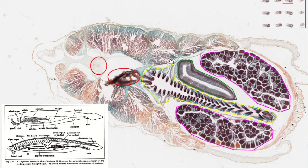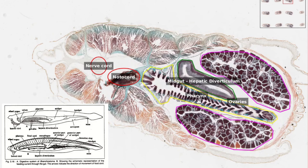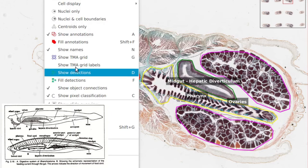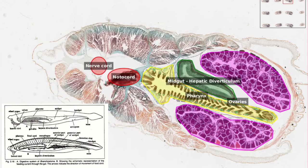So I have made some annotations. The pharynx here in yellow. The ovaries in purple. And the mid-gut, or the hepatic diverticulum, in green.